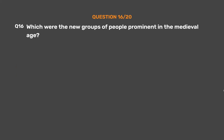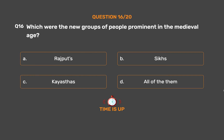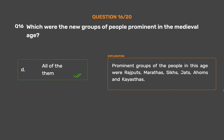Question 16: Which were the new groups of people prominent in the medieval age? Option A: Rajputs. Option B: Sikhs. Option C: Kayasthas. Option D: All of them. The correct answer is Option D: All of them. Prominent groups of people in this age were Rajputs, Marathas, Sikhs, Jats, Ahoms and Kayasthas.